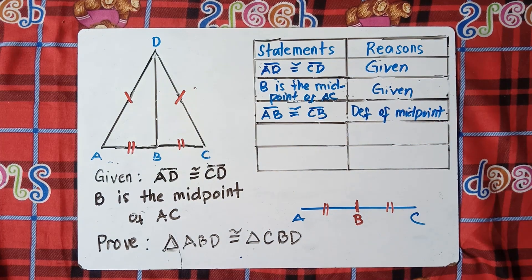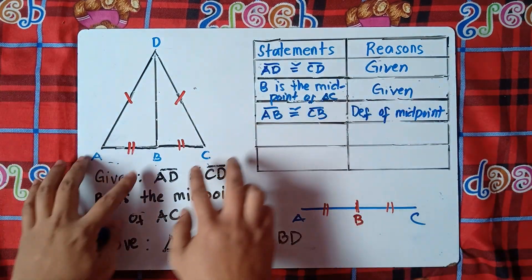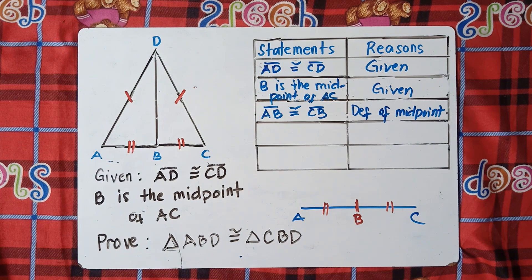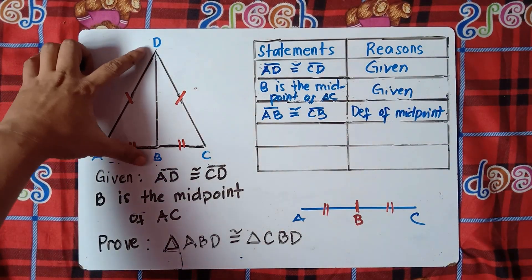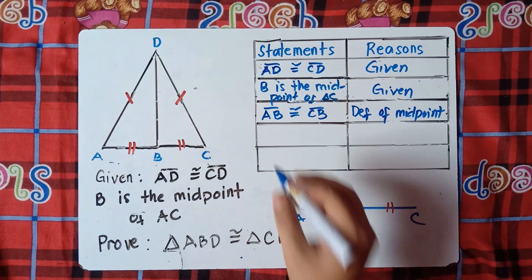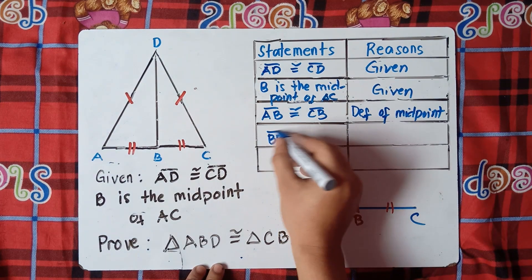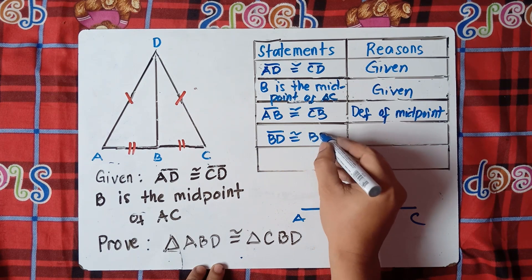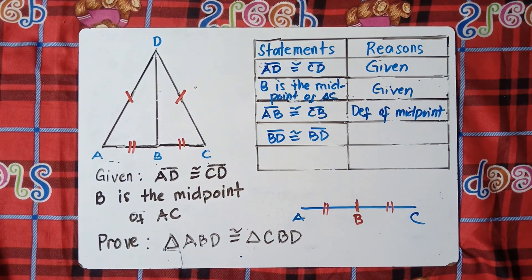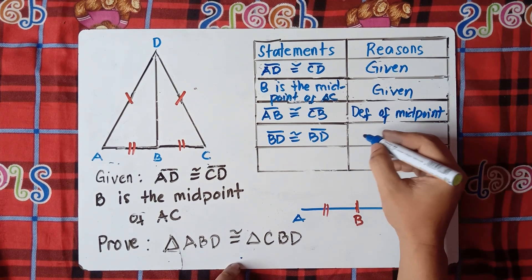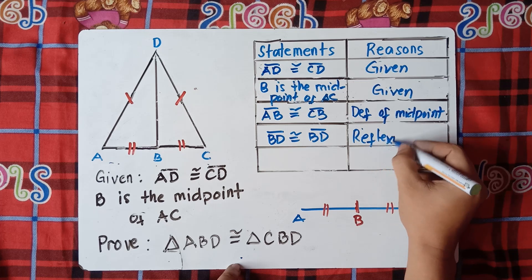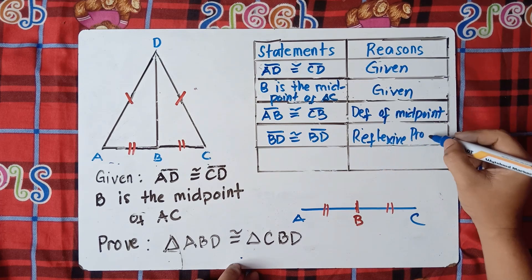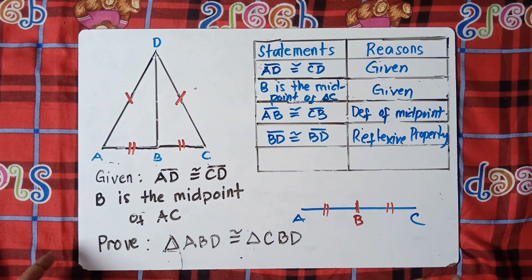So we have two sides that are equal: AD≅DC and AB≅BC. What else? They both share the same side, which is BD. So we can say that BD is congruent to BD — and once again, if they both share the same side, we call that the reflexive property.